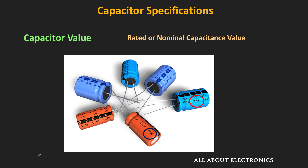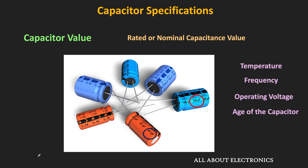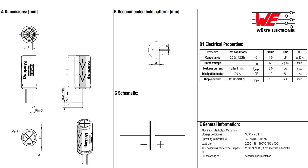The actual value of the capacitor may differ from its nominal value, because the actual value also depends on the temperature, frequency, operating voltage, as well as the age of the capacitor. Depending on all these parameters, the actual value of the capacitance will change. In the datasheet, this nominal capacitance value is specified with the test condition.